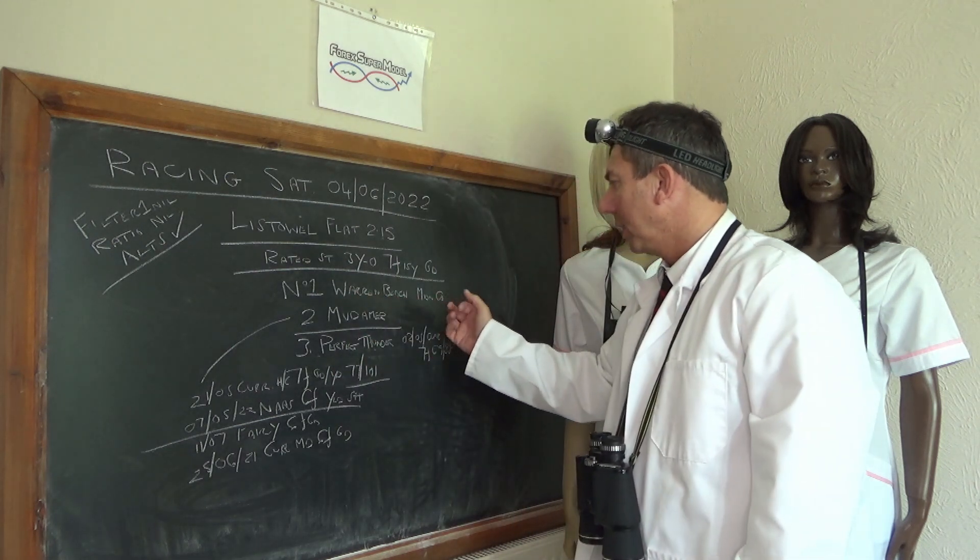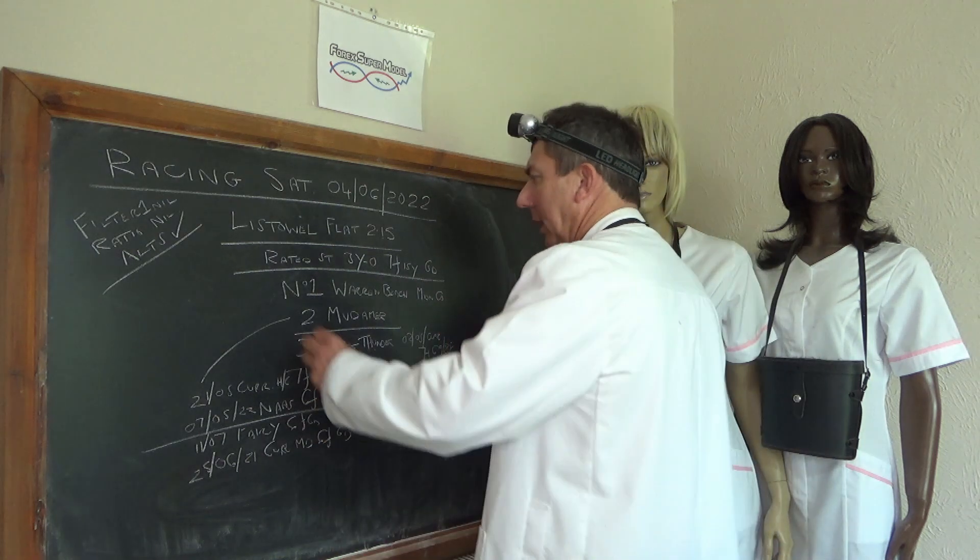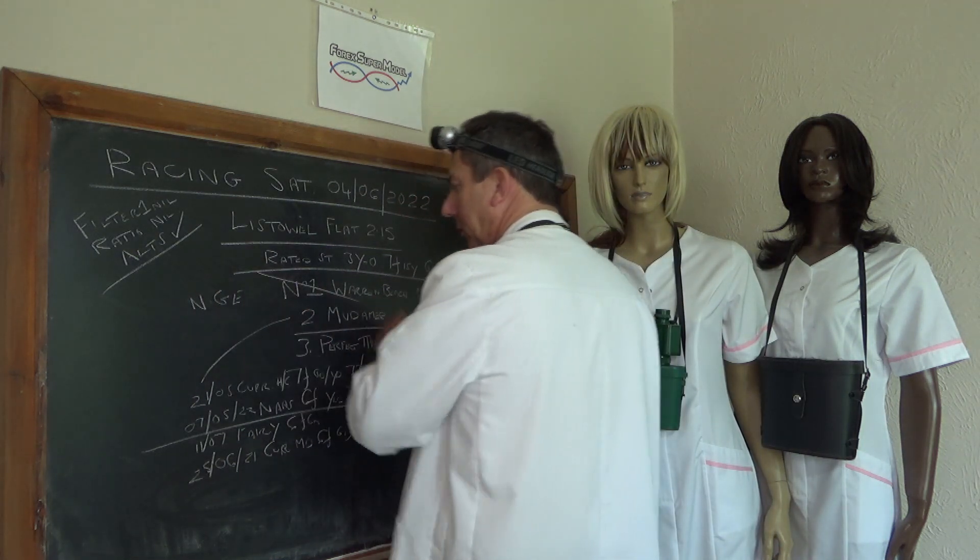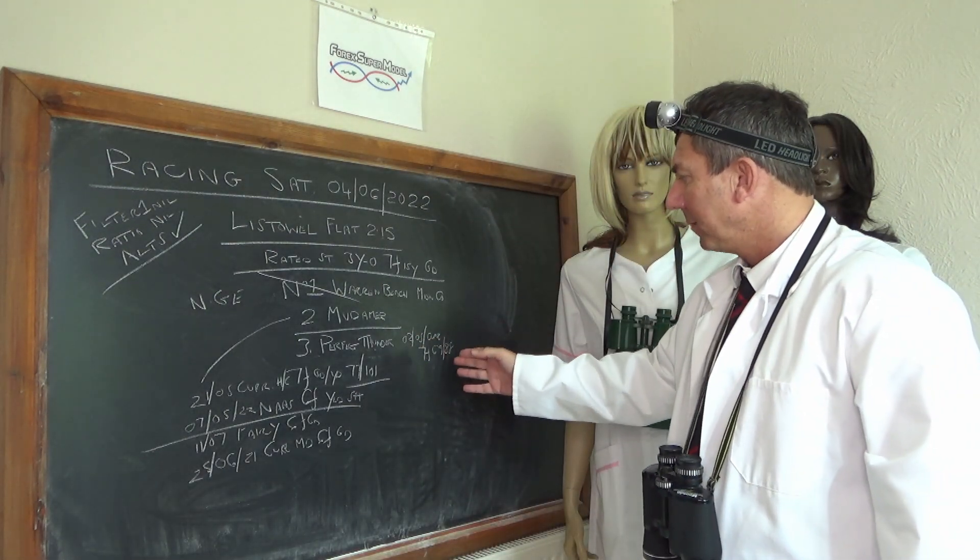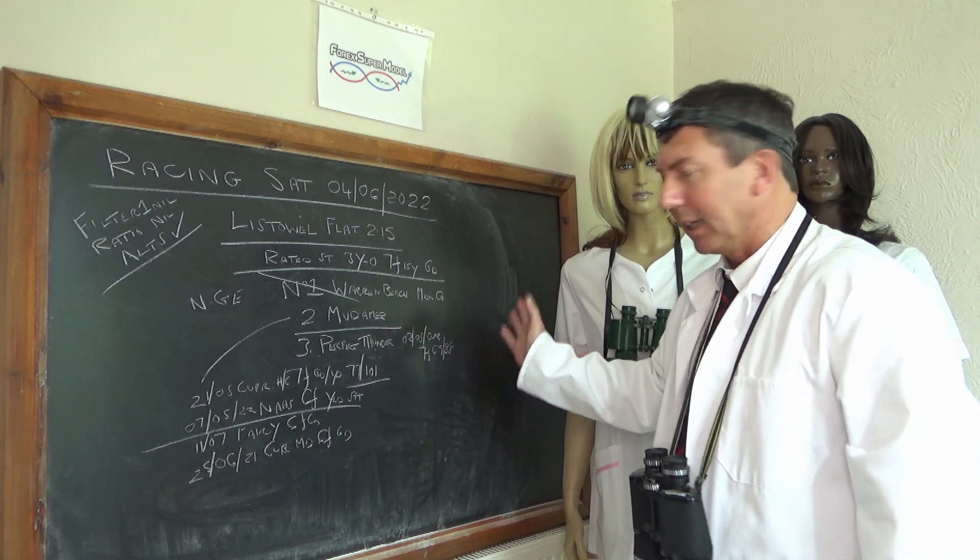There's number 1, Warren Beach, has been messing about in Maiden Company and we don't think that's NGE, it's probably not good enough, so get rid of that one. Then number 3, Perfect Thunder, second at the fifth Curragh, 7 furlongs. We rate that a 69.88.